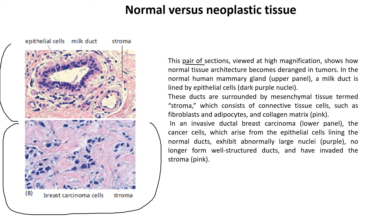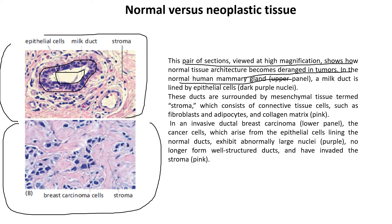In a normal cell, this section viewed at high magnification shows how normal tissue architecture becomes deranged in tumors. A normal human mammary gland milk duct is lined by epithelial cells — the white portion is the milk duct, which is lined by this dark purple lining known as the epithelial cells. These epithelial cells are covered wholly by stroma.